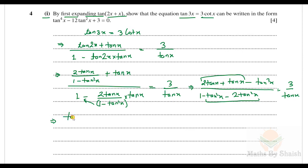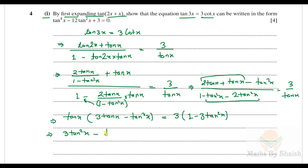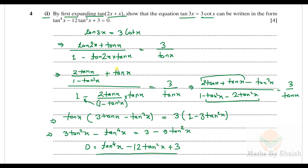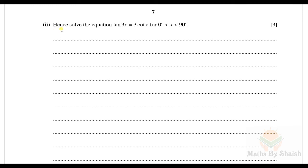After cross-multiplying, we get tan x(3tan x − tan³x) = 3(1−3tan²x), which gives 3tan²x − tan⁴x = 3 − 9tan²x. Rearranging all terms to one side: tan⁴x − 12tan²x + 3 = 0. This is the required form, and I hope that is clear.